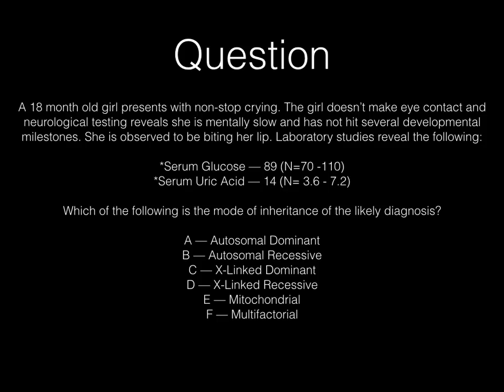An 18-month-old girl presents with non-stop crying. She does not make eye contact, and neurological testing reveals that she is mentally slow and has not yet hit several developmental milestones. She is observed to be biting her lip. Laboratory studies reveal: serum glucose is 89, within normal limits; serum uric acid is 14, which is markedly elevated. Which of the following is the mode of inheritance of the likely diagnosis?